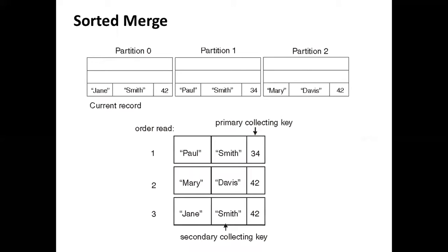Those were keyless collection methods. We also have a key-based collection method where you want to sort the data based on some key columns. In this example, we have three partitions coming from our source data — partition 0, partition 1, and partition 2 — each with defined records and values. In sorted merge, we need to define the key column based on which we want to do our collection. Here, the primary collecting key is defined as age.